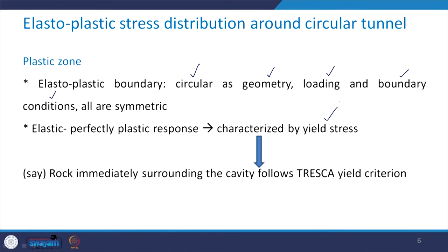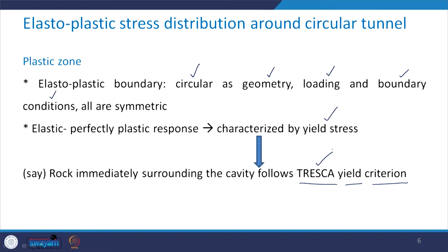We are assuming elastic-perfectly plastic response of the rock, characterized by a yield stress. It is assumed that rock immediately surrounding the cavity follows the Tresca yield criterion. It is not necessary that it follows the Tresca criterion — it can follow the Mohr-Coulomb failure criterion as well. But within the scope of this course, we will restrict to the Tresca yield criterion. However, the procedure for elasto-plastic analysis is general enough to apply any failure criterion.